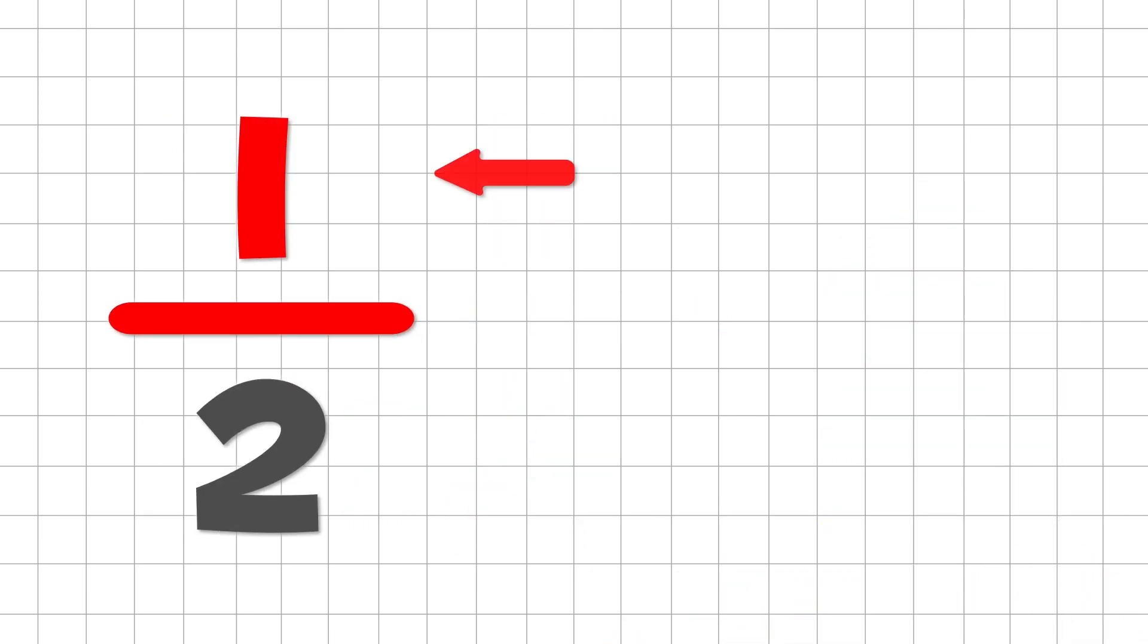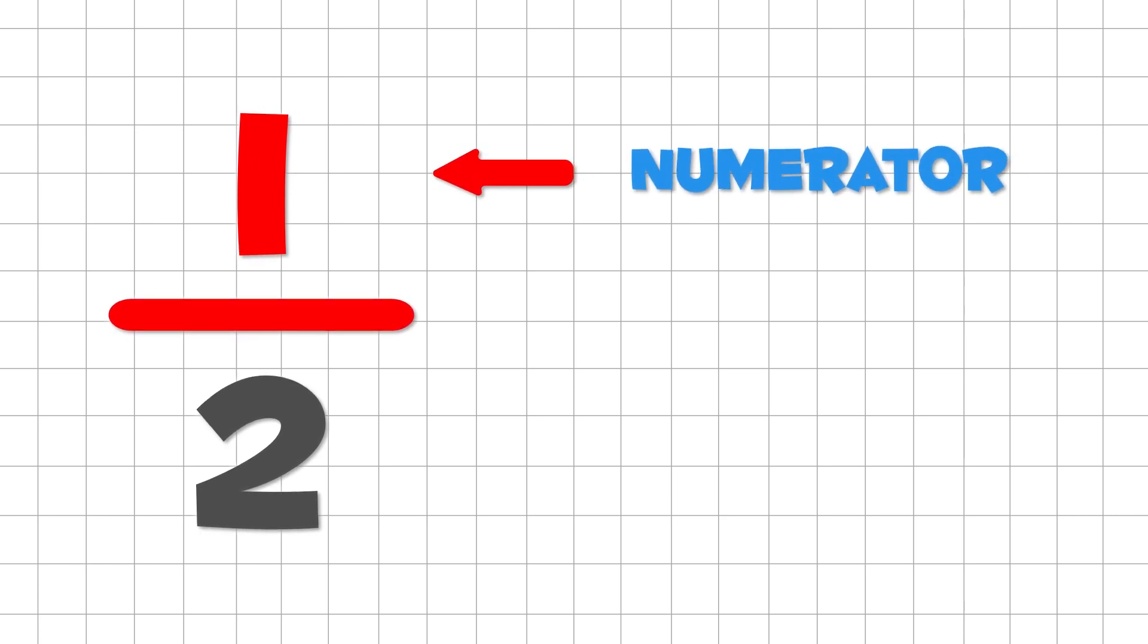The number above the line is called the numerator. Repeat after me. Numerator. Well done.